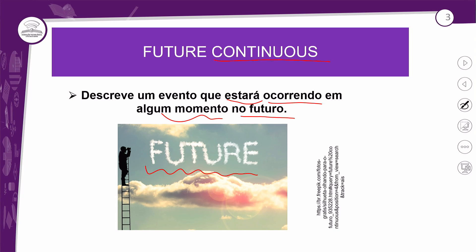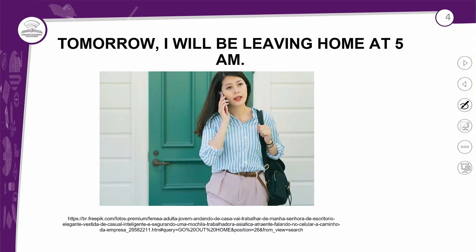Então, basicamente, é isso que significa o Future Continuous. Você vai usar o futuro contínuo para expressar ações que estarão ocorrendo em algum momento no futuro. É isso, basicamente.